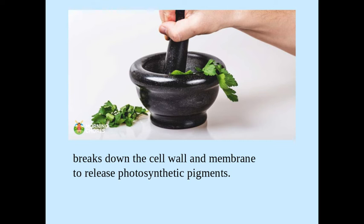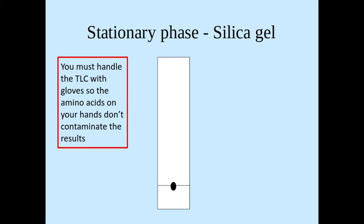Once you release those photosynthetic pigments and you've got a kind of paste in there, you'd use a capillary tubing to put a small dot of the mixture onto a pencil line that you've drawn on a thin layer chromatography plate.